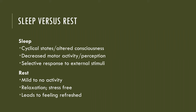Sleep versus rest — what's the difference? Sleep is a cyclically occurring state of decreased motor activity and perception. It occurs in a cycle. During sleep, body functions slow and metabolism falls by 20 to 30%, so the body conserves energy. Sleep is characterized by altered consciousness — a sleeping person is unaware of the environment and responds selectively to external stimuli, like an alarm clock or a bright light, but everyday background noises and soft light typically do not awaken them.